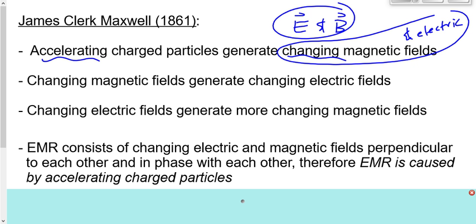Here's what ties it all together. Electromagnetic radiation, or EMR, consists of changing electric and magnetic fields — that sinusoidal electric field and sinusoidal magnetic field perpendicular to each other, in phase with each other. That's what EMR is. If EMR consists of changing electric and magnetic fields, and this is how we get changing fields propagating from accelerating charged particles, then it must be accelerating charged particles that generate EMR. That's the big conclusion.